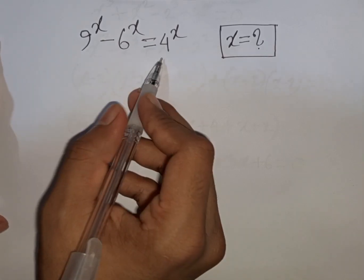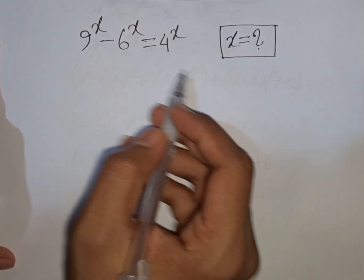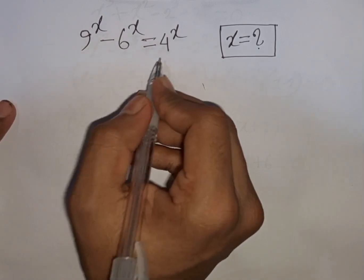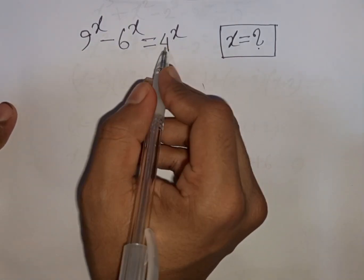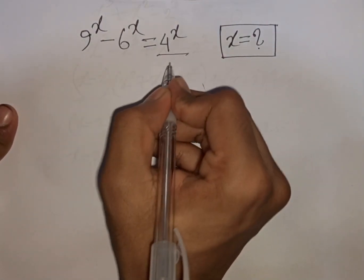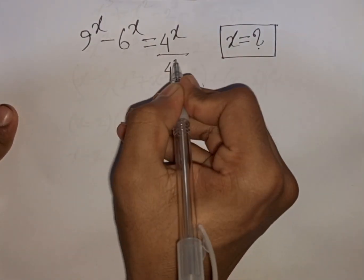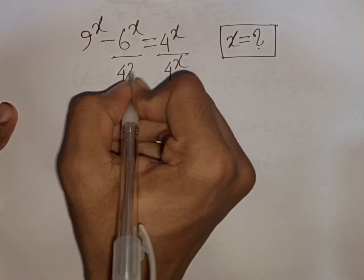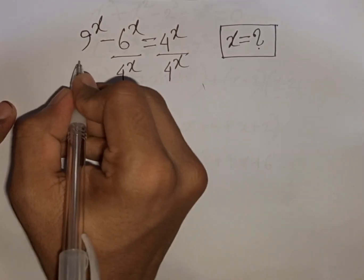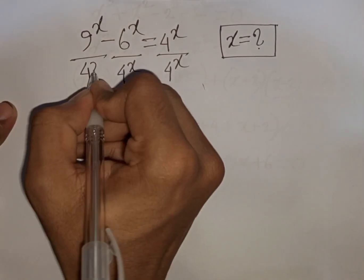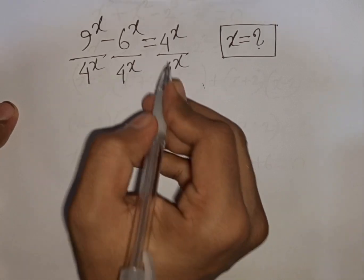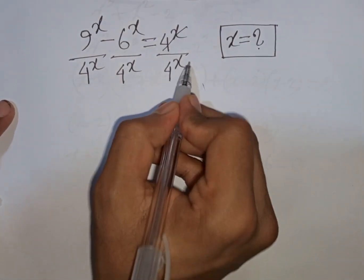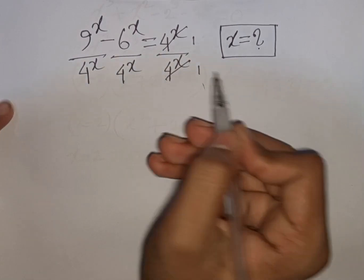We have (x minus 6) power x is equal to 4 power x. Find the value of x. First, we divide both sides by 4 power x, so 4 power x will be cancelled.